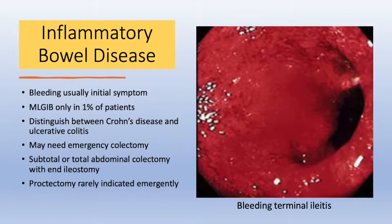Inflammatory bowel disease typically presents with bleeding, but causes massive lower GI bleeding in only 1% of patients. It's important to distinguish between Crohn's disease and ulcerative colitis for surgical decision-making. Small bowel involvement or rectal sparing can help favor Crohn's disease. If a patient fails conservative management, an emergency colectomy may be needed. A proctectomy, however, is rarely indicated in the emergency setting.